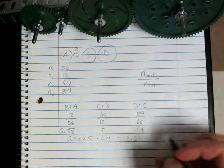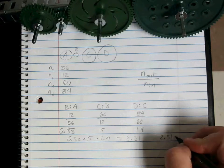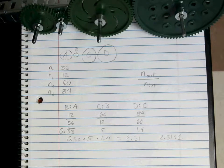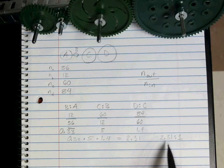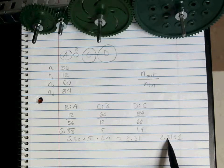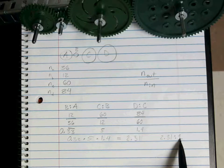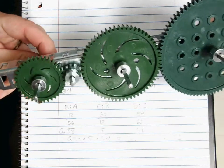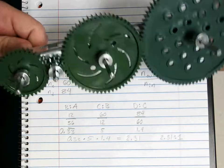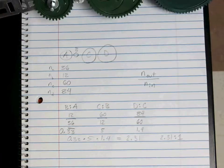Our overall gear ratio is 2.31 to 1. The conclusions section asks how many times gear A rotates compared to gear D — gear A will rotate 2.31 times for every single time gear D rotates. So the small gear rotates about twice before the last large gear rotates once.